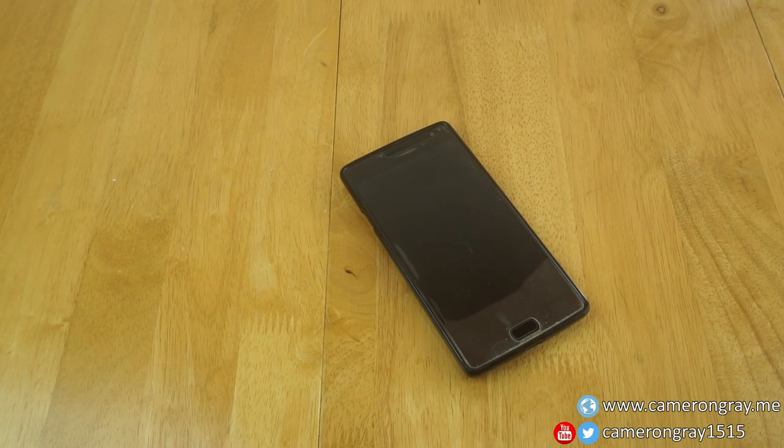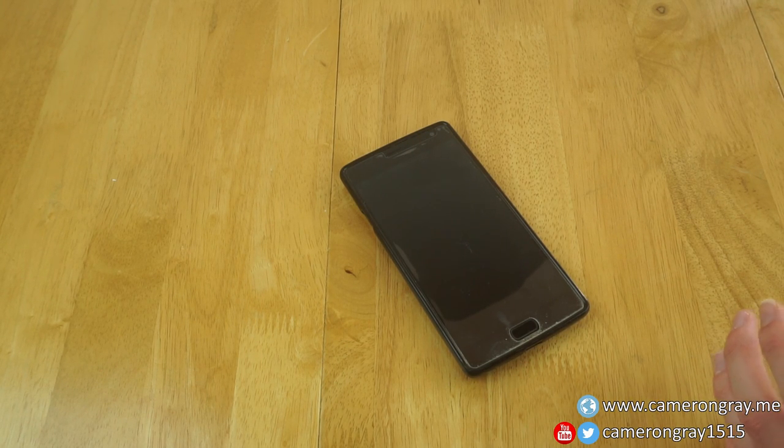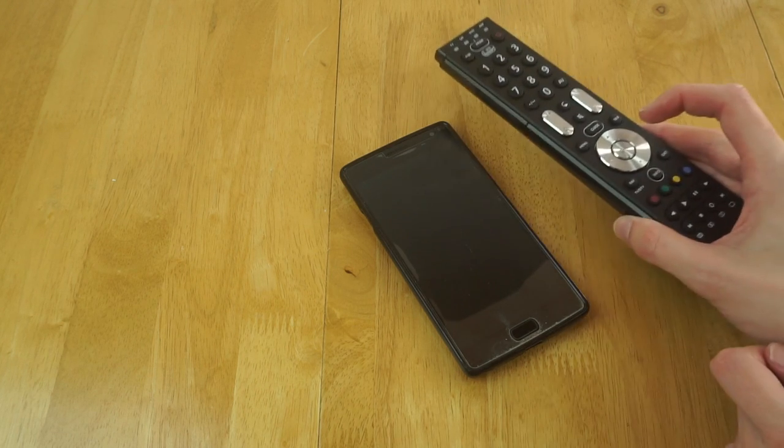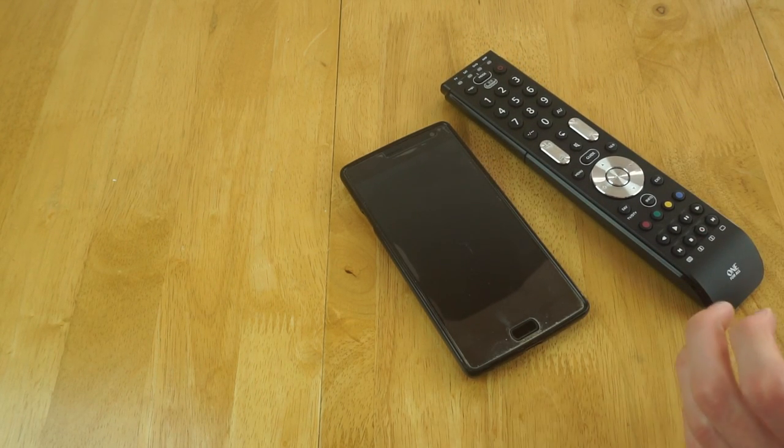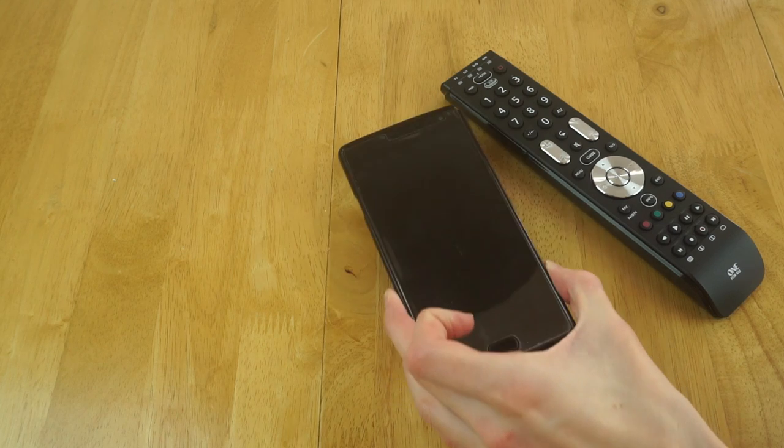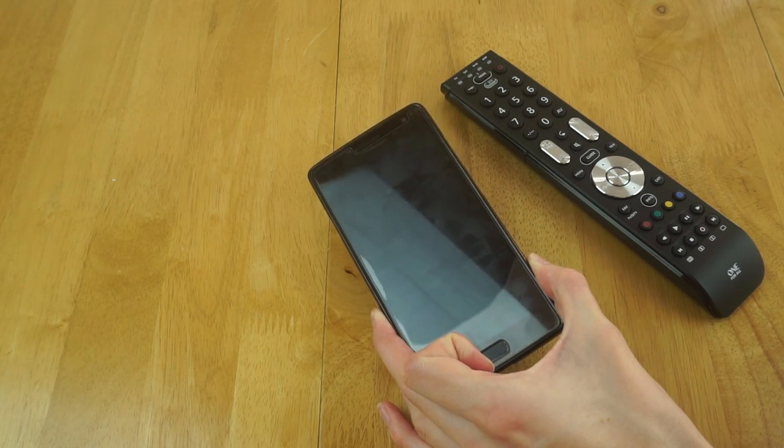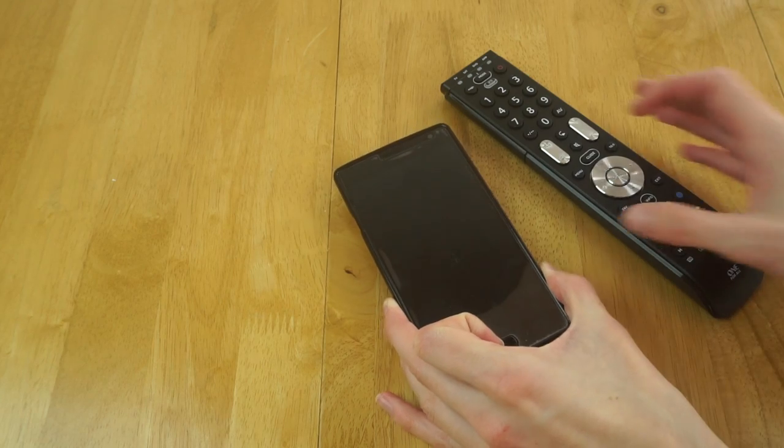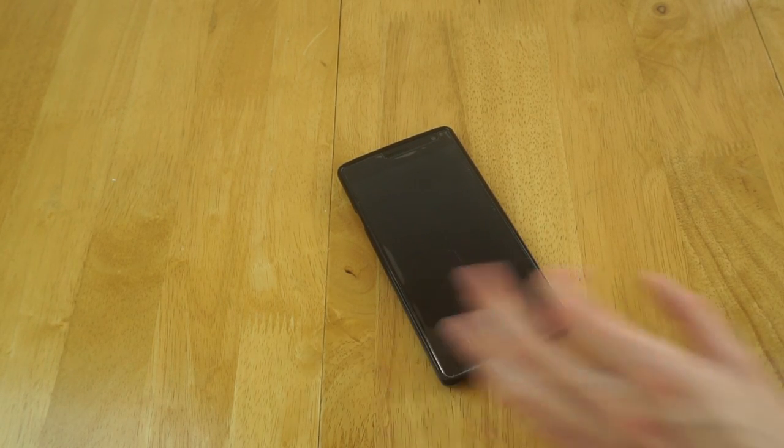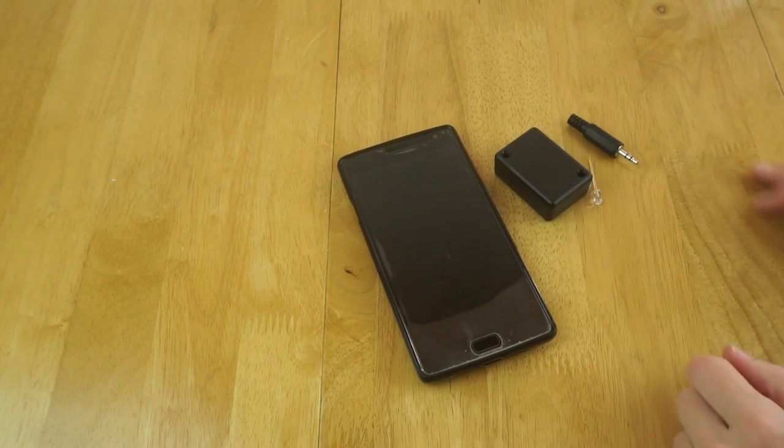One feature that many modern smartphones have is an IR blaster, which allows you to use the phone as a universal remote control. However, my phone, which is a OnePlus 2, along with most other smartphones, don't have the hardware for this installed, so you can't actually do it. So in this video, I plan on making my own using just a few simple components.